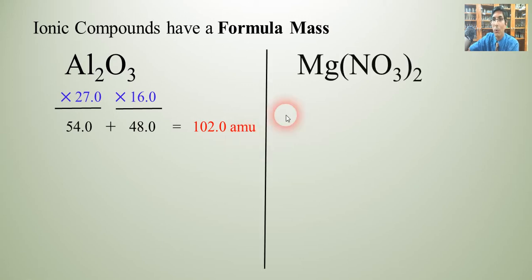We can do the same thing for magnesium nitrate. Even though we have a polyatomic ion it basically works the same way. We have one atom of magnesium here and we're going to multiply that by magnesium's atomic mass about 24.3.